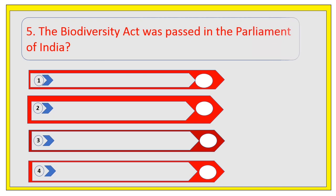The biodiversity act was passed in the Parliament of India. Options are 2005, 2003, 2002, and 2000.